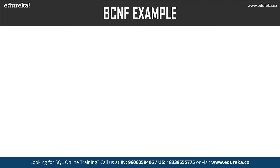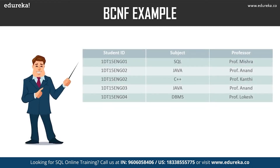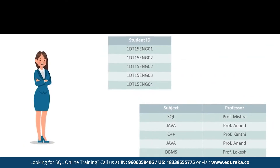In the given table, one student can enroll for multiple subjects, multiple professors can teach one subject, and for each subject a professor is assigned to a student. All normal forms are satisfied except Boyce-Codd normal form, because student ID and subject form the primary key — making subject a prime attribute — but professor depends on subject while being a non-prime attribute, which is not allowed by Boyce-Codd normal form.